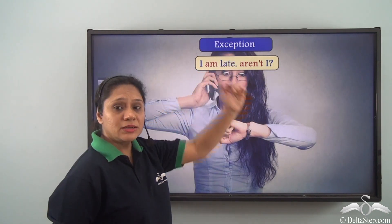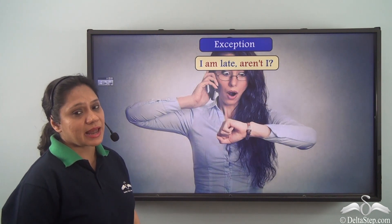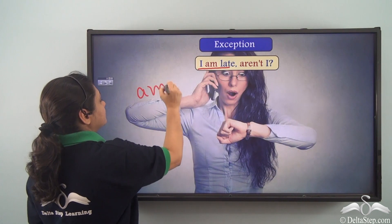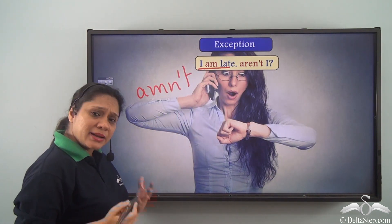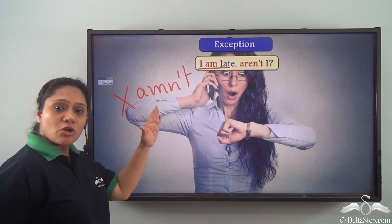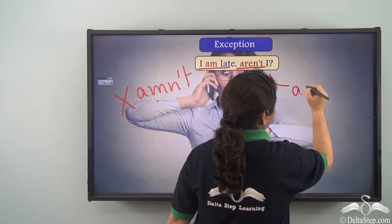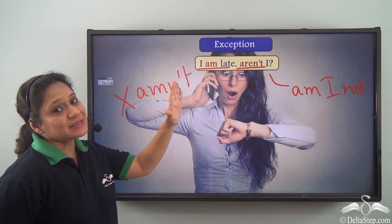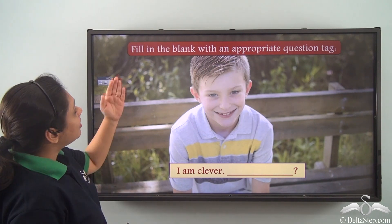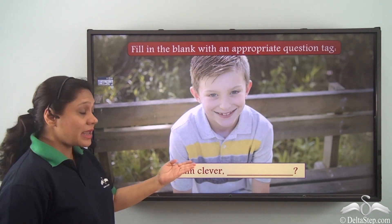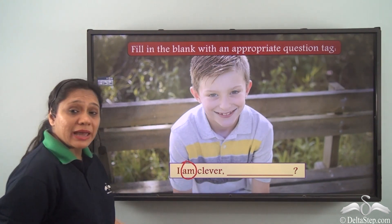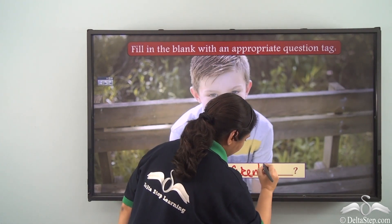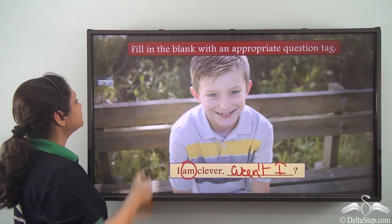'I am late, aren't I?' — this kind of construction is difficult to understand. When we say 'I am late,' you might think the question tag should be 'amn't I?' but that construction does not exist. So remember: 'aren't I' means 'am I not.' For the exercise: 'I am clever, aren't I?' — we cannot say 'amn't I,' so the correct form is 'aren't I.'